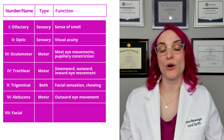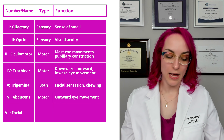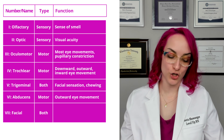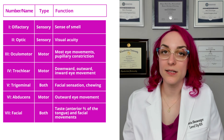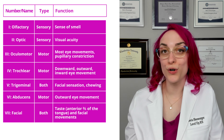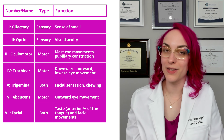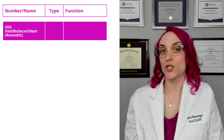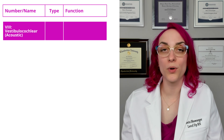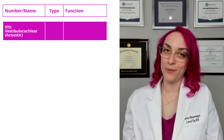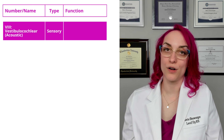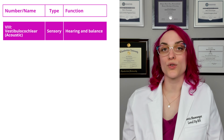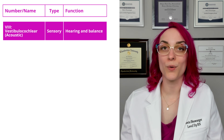Cranial nerve 7 is facial. The facial nerve is mixed — it has both sensory and motor functions. This one controls taste on the anterior two-thirds of the tongue and facial movements. Cranial nerve 8 has two names you might hear: vestibulocochlear or acoustic. Either way, this is a sensory-only nerve, and its function is hearing and balance.